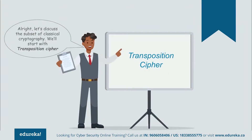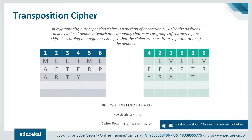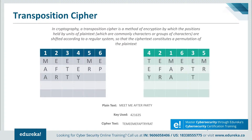In a transposition cipher, the positions held by units of plaintext — commonly characters or groups of characters — are shifted according to a regular system so that the ciphertext constitutes a permutation of the plaintext. The plain text is reordered. Mathematically, a bijective function is used on character positions to encrypt and an inverse function to decrypt. For example, a message 'meet me after the party' is arranged in an encryption matrix of six rows and columns. A key such as 421635 is used to rearrange the matrix and produce an unreadable ciphertext.